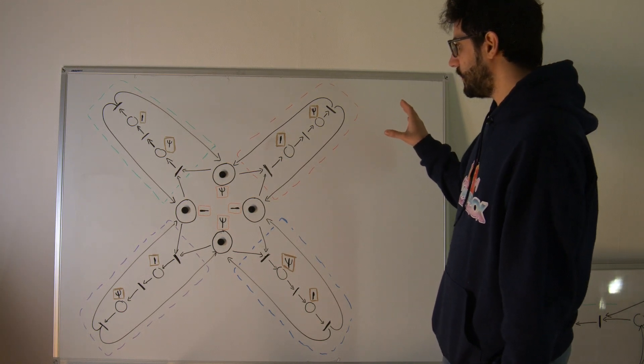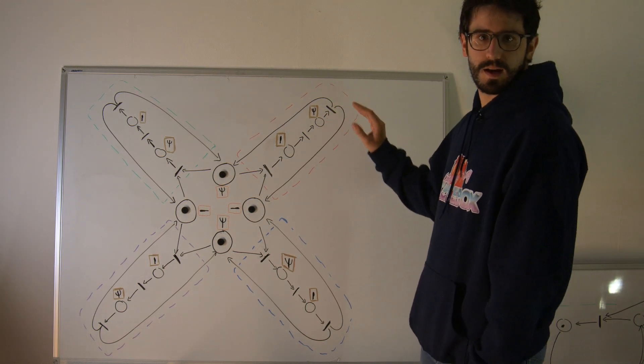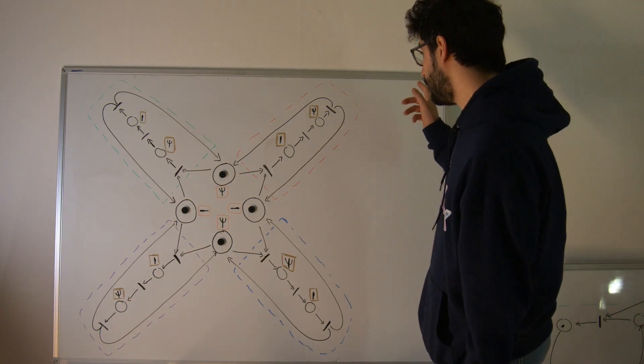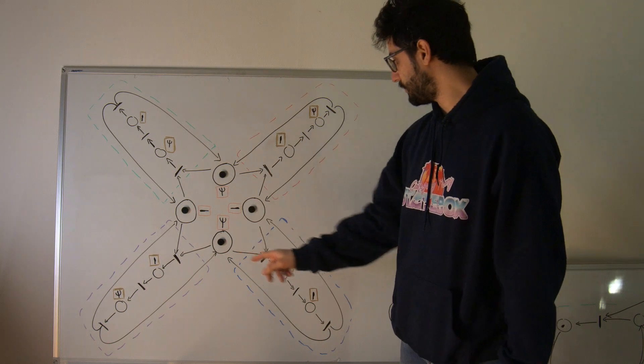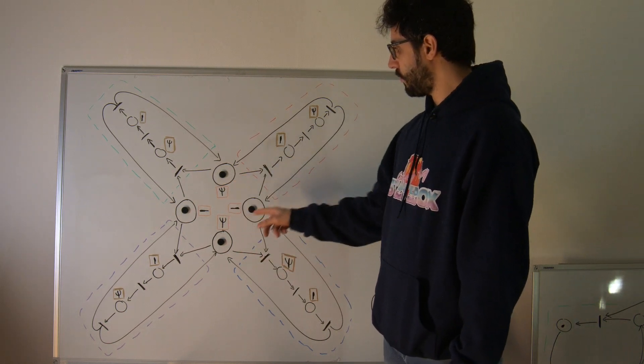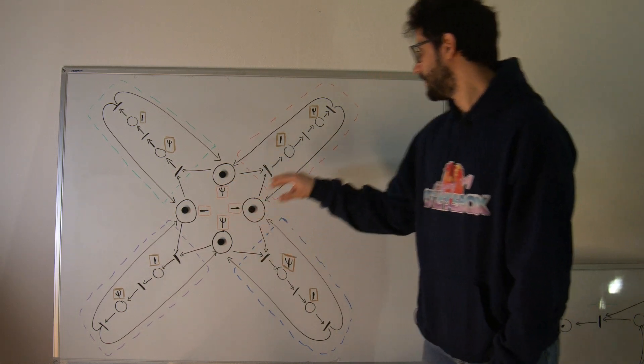In here you can see that the fundamental elements of the dining philosophers problem are still there, like the four philosophers red, green, purple, blue and the four cutlery pieces are here in the middle.